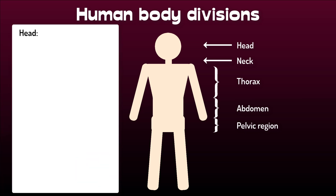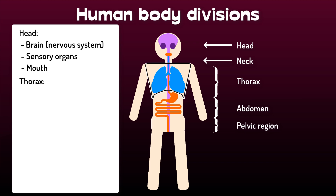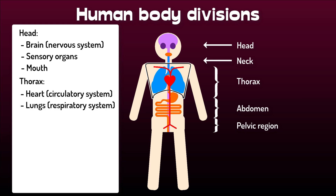The head contains the brain, the main sensory organs like the eyes and ears, and the mouth. The mouth is the entrance point for both our digestive tract and our breathing apparatus, the latter together with the nose, through which we also use our sense of smell. The chest or thorax is a sturdy box protecting the vital organs of the heart and lungs, making it the central hub of the circulation and respiratory systems.